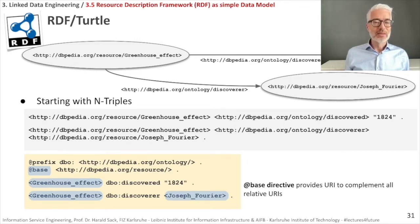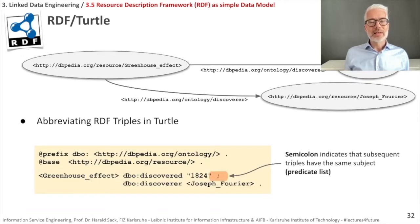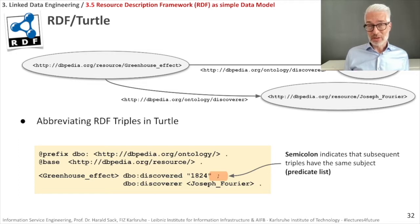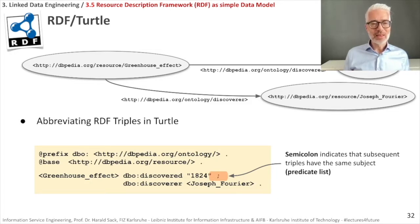To make triples even shorter, when two triples share the same subject you don't need to repeat it. Instead of a period after the first triple, use a semicolon — this indicates the next triple has the same subject. This is called a predicate list. For example: greenhouse effect discovered-in 1824; dbo:discoverer Joseph Fourier.